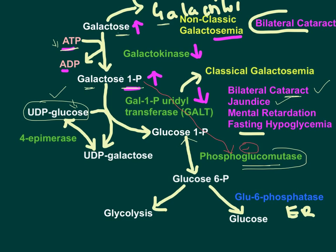To recap: non-classic galactosemia is due to deficiency of galactokinase enzyme; the only sign is bilateral cataract along with elevated galactose in blood and urine. Classic galactosemia is due to deficiency of GALT enzyme (galactose-1-phosphate uridyl transferase); major signs include fasting hypoglycemia, mental retardation, indirect jaundice, and bilateral cataract, along with elevated galactose in blood and urine.